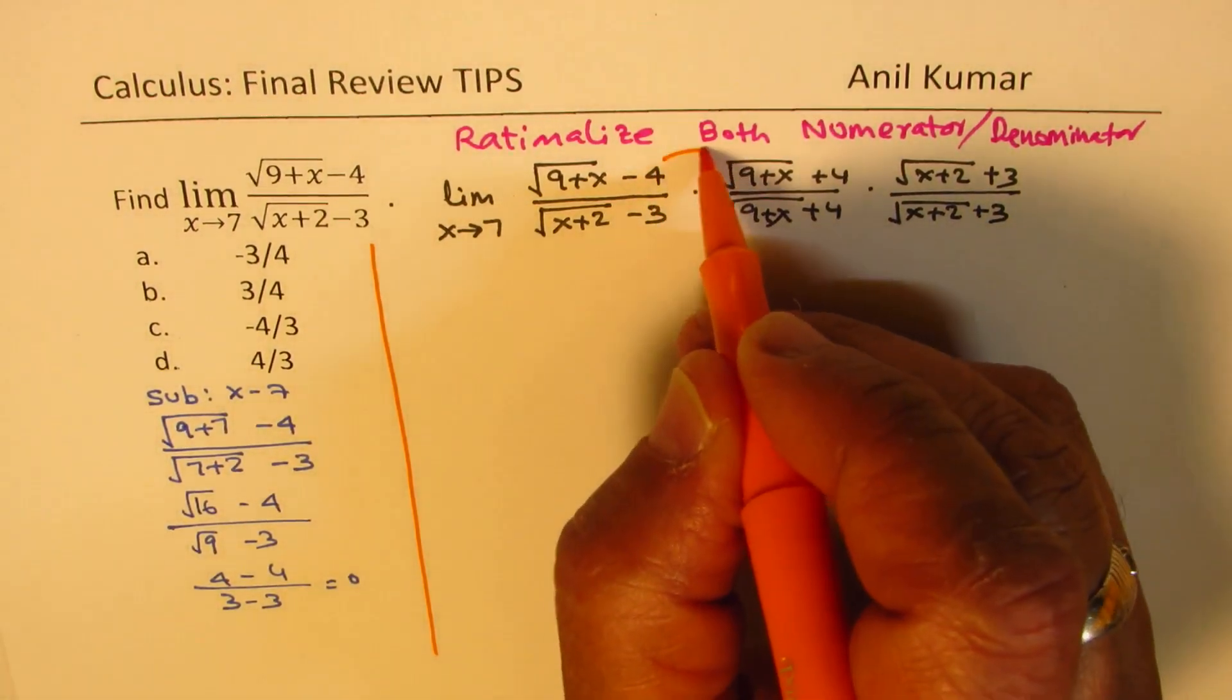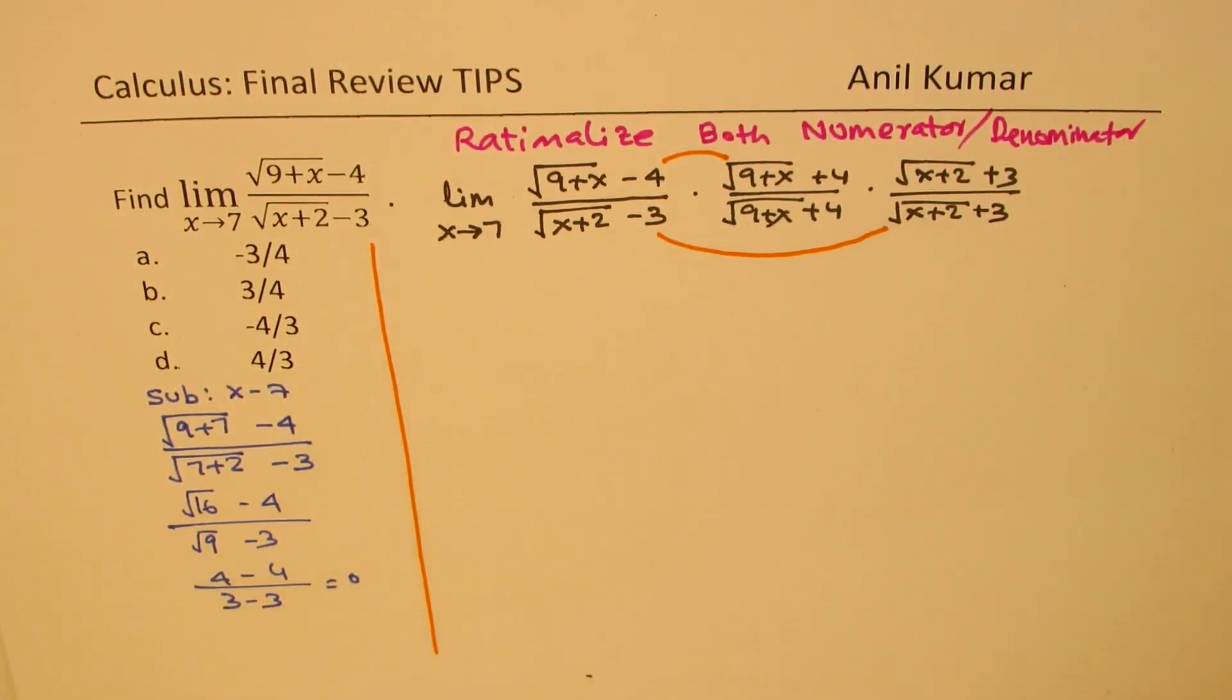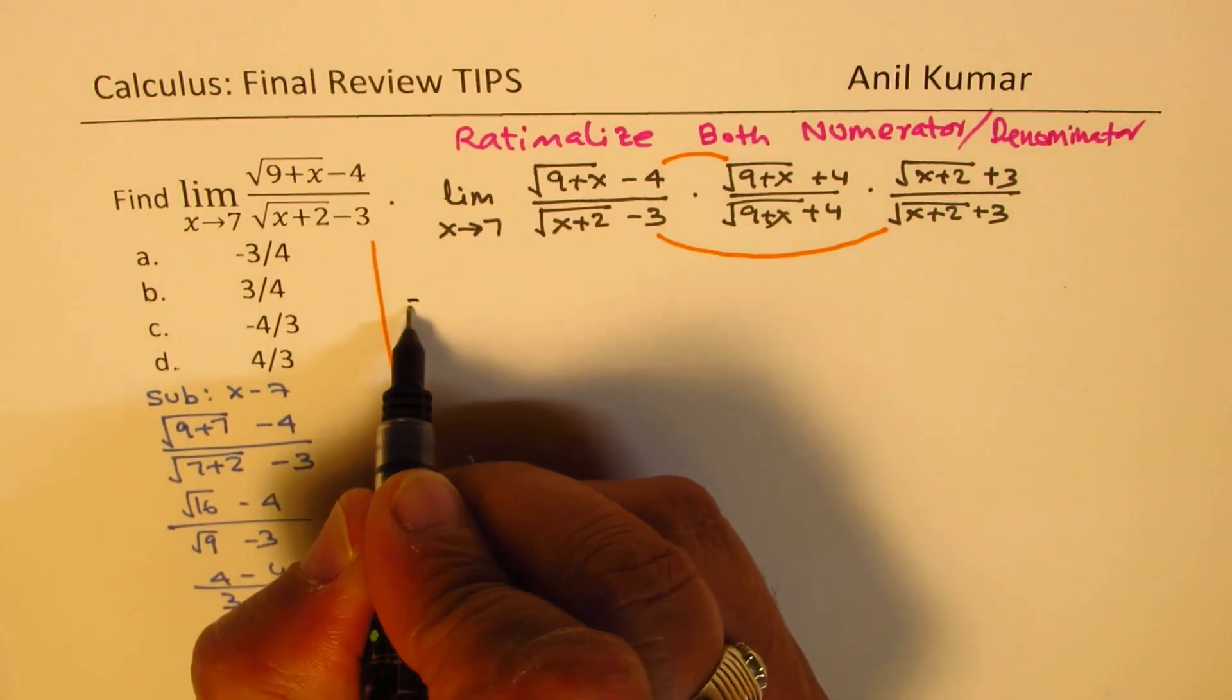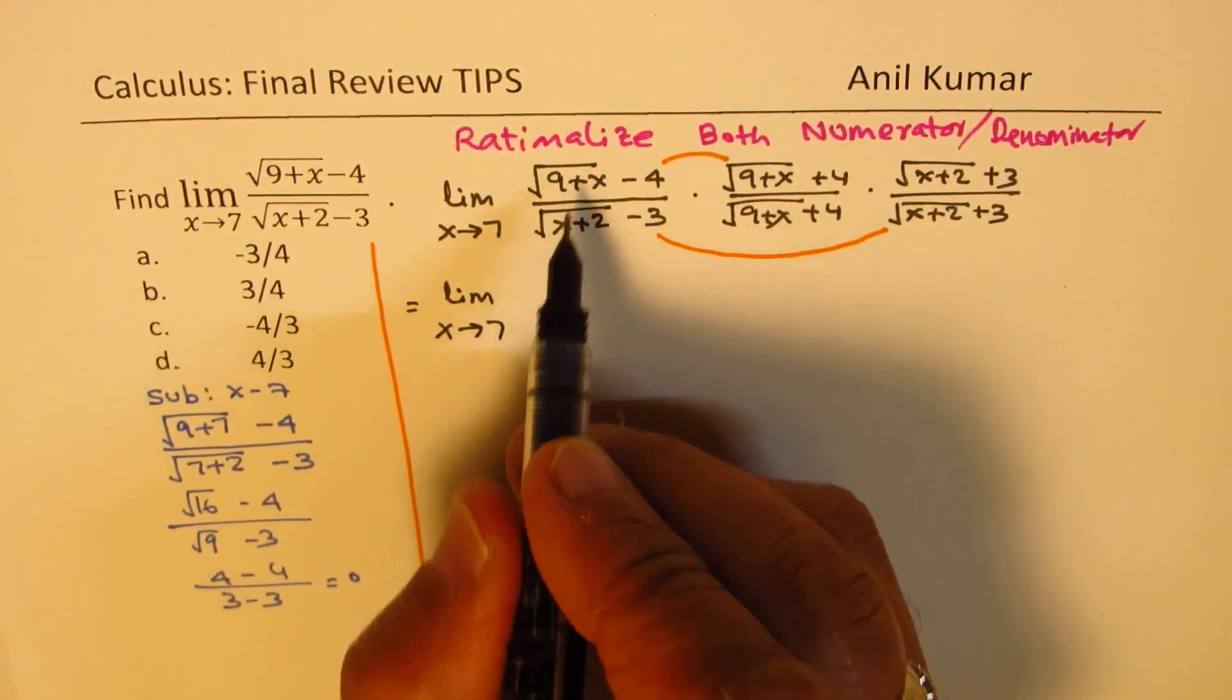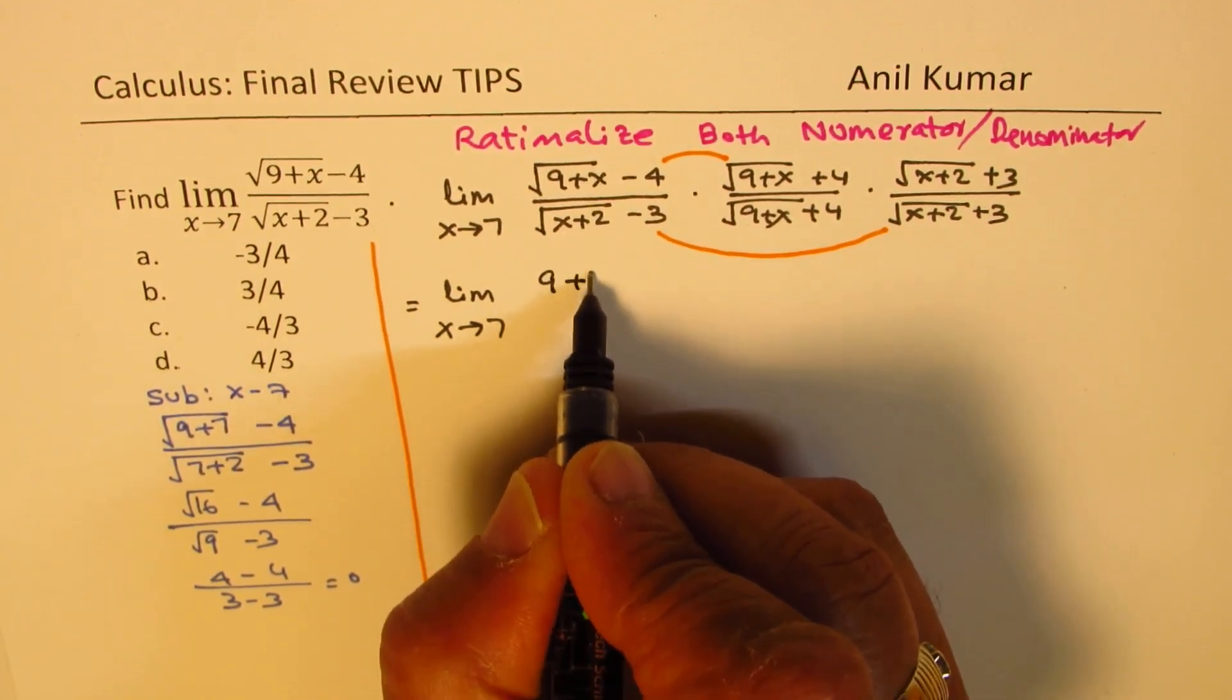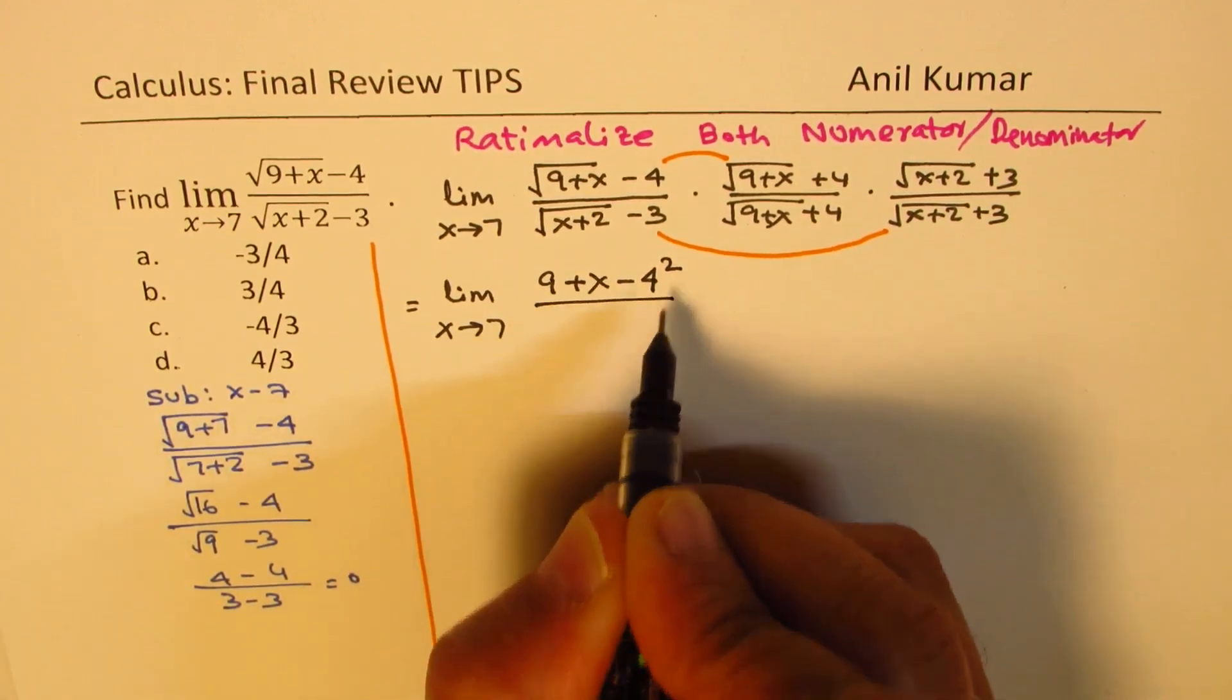When you multiply these two terms and these two terms, you get difference of squares. A plus b times a minus b gives you difference of square. So we get here limit x approaches 7. So square of square root will be 9 plus x minus 4 square.